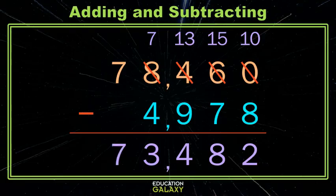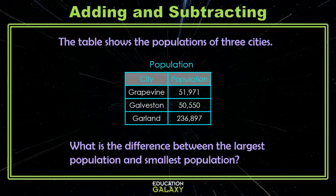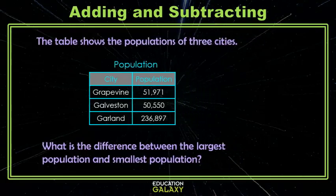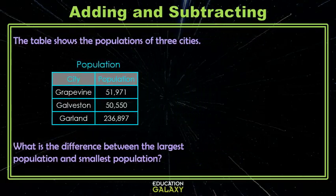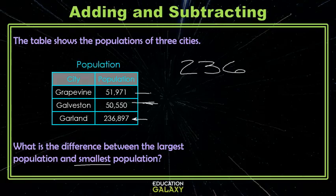Okay, let's try a real world example — word problem. We have three populations here and we want to know the difference between the biggest city and the smallest city. Let's give ourselves some room to work here. Let's first find the largest city. So these are both five-digit numbers, so this six-digit number is the largest. And then we want to know the difference between that one and the smallest. I have a five in the ten thousands here, but I have a one in the thousands here and a zero in the thousands here, which makes this one the smallest. So now let's write our subtraction problem: 236,897 minus 50,550.